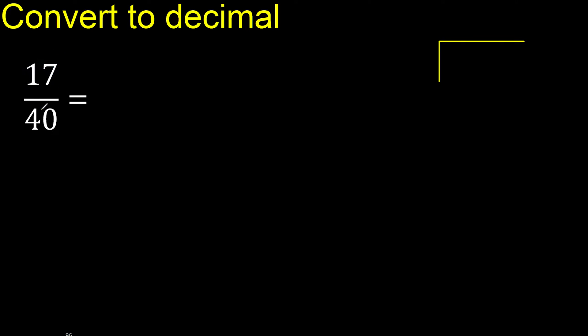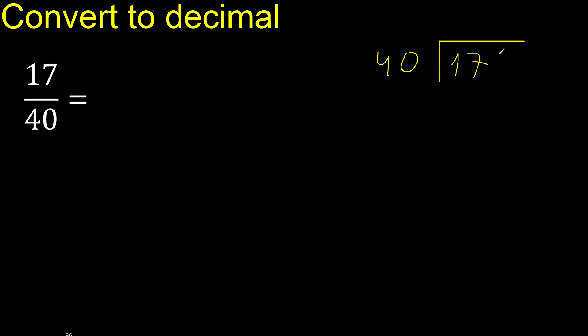17 divided by 40. 17 is less, therefore complete — always complete with 0. Here, 0 point.